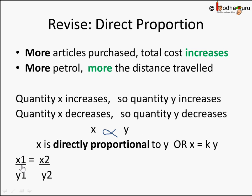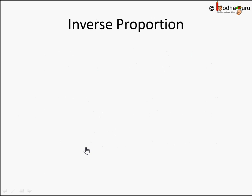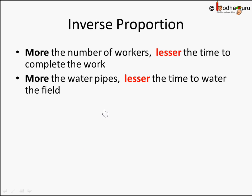We also solved some problems in our last lesson: X1 by Y1 equals X2 by Y2. Given three quantities, we can find the fourth quantity. Now let's learn in this lesson what is inverse proportion.